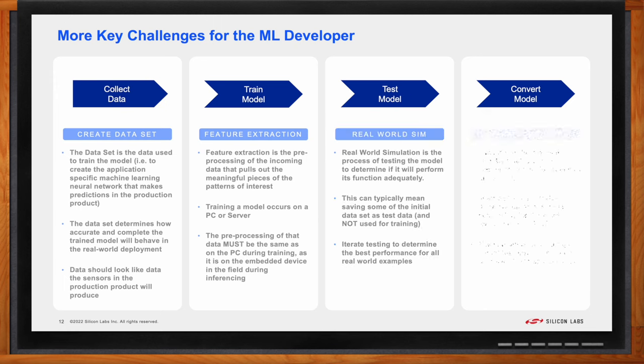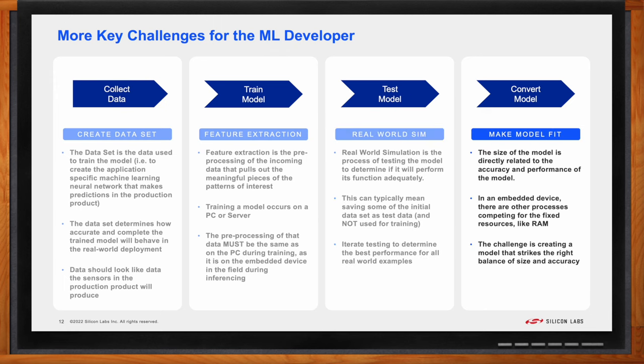And finally, there is a balance between the accuracy of a model and how big it is. The more accurate the model, the bigger the model. But within an embedded device, there's limited resources that can be dedicated to machine learning. Therefore, it's an important challenge to find the right balance between model performance and model fit.